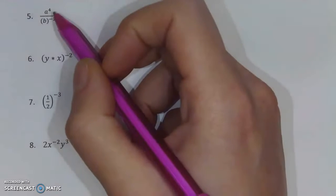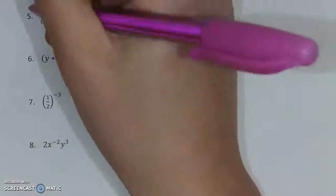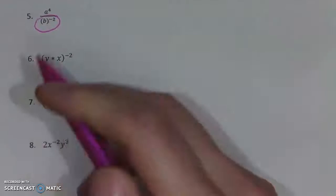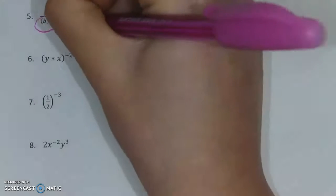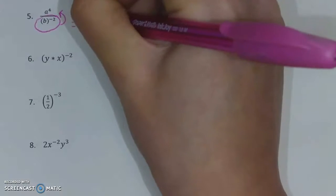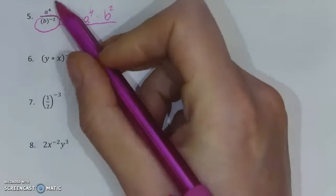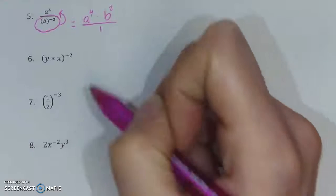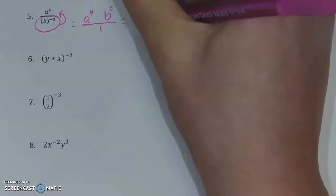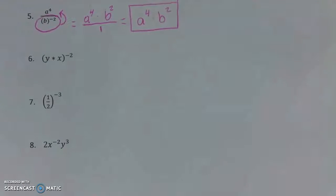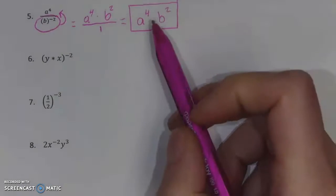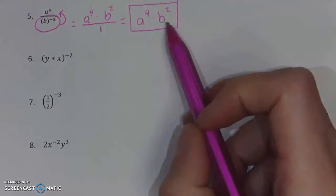Be careful that when you are moving things, you are only moving what you absolutely need to. Here, A to the fourth does not have a negative, but B to the negative second does. Because B to the negative second has that negative, we are going to move it to the top and exchange the negative. A to the fourth stays at the top and is then being multiplied by B to the second — that's where B moved. On the bottom, there is a one. Division by one doesn't change numbers, so we can simplify to A to the fourth times B to the second, which can't be combined further since the bases are different.